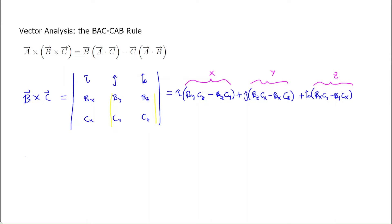Now let's figure out what A cross (B cross C) is — the parentheses here are important because the vector cross product does not follow an associative rule. Unlike scalar addition or multiplication, with cross products the grouping actually makes a difference. So the placement of the parentheses is crucial.